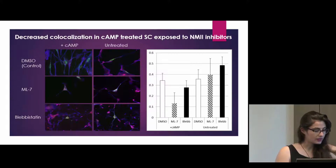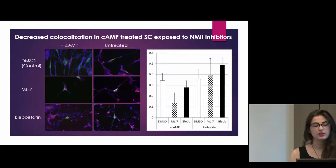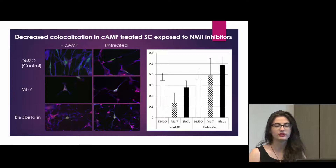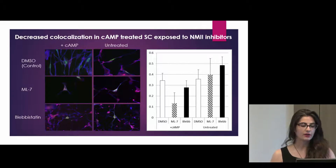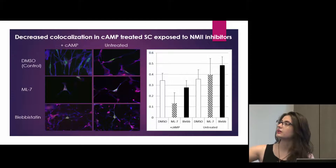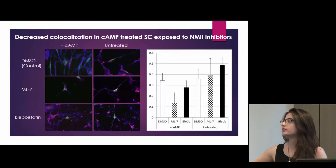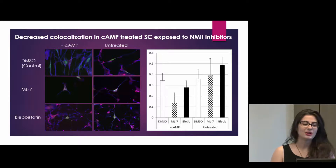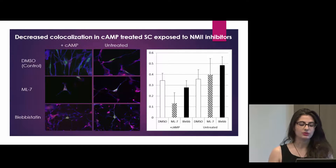In our first experiment, we took Schwann cells only, treated them with myosin inhibitors — blebbistatin, which inhibits myosin nonspecifically, and ML7, which inhibits MLCK. We found that when we added cyclic AMP, which induces myelination programming in Schwann cells, there was a decrease in the co-localization of RAB7 and myosin in the Schwann cells treated with the inhibitors.